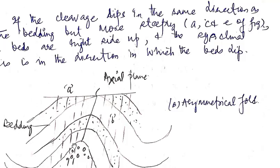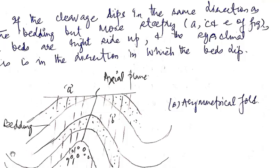The second case is if the cleavage dips in the same direction as the bedding. The cleavage planes are dipping more steeply than the bedding planes. In this case the beds are right side up, and the synclinal axis — the closure of the fold — will be in the direction in which the bedding planes are dipping.